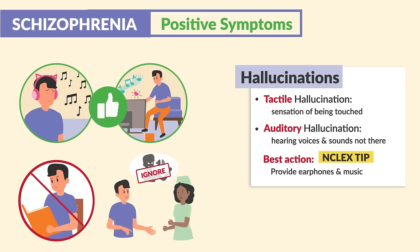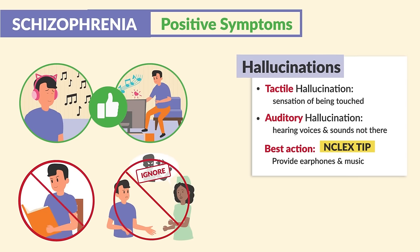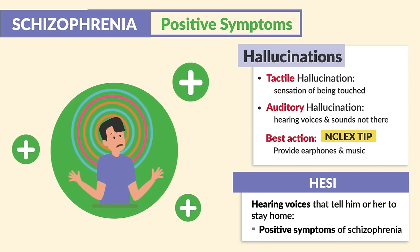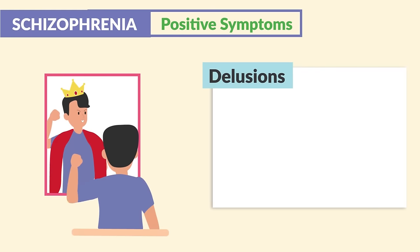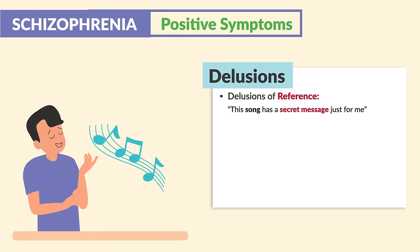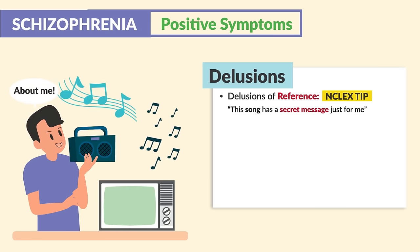Audio stimulation is best for the voices in the head — not reading a book or simply telling the client to ignore it. So if a client mentions hearing voices that tell him or her to stay home, these are positive symptoms of schizophrenia. Now delusions are false beliefs that the client feels very strongly about, and they won't change their mind even though they know it's false. For example, delusions of reference: 'This song has a secret message just for me.' Clients feel that songs, TV shows, or news articles are a personal message to them.